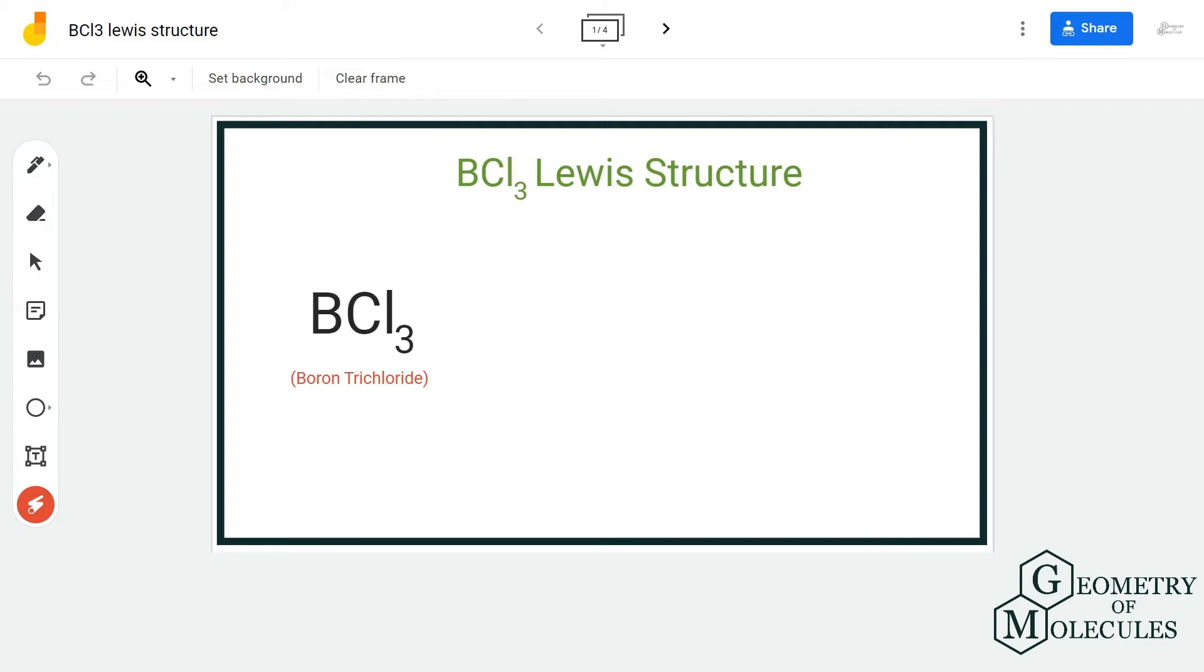Hi guys, welcome back to our channel. In today's video, we are going to help you determine the Lewis structure for BCl3, the chemical formula for boron trichloride. To determine its Lewis structure, we are first going to look at the total number of valence electrons for this molecule.